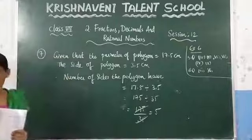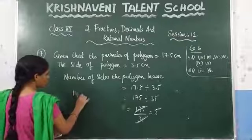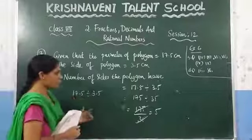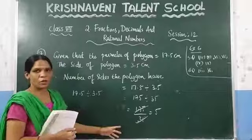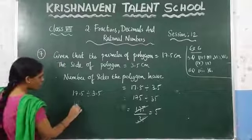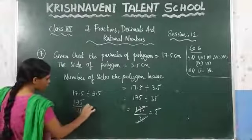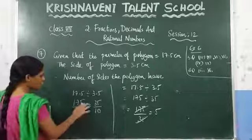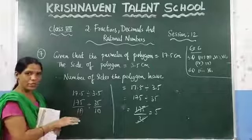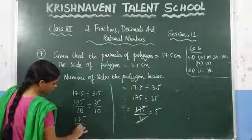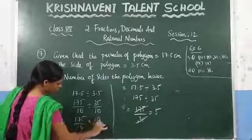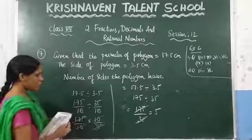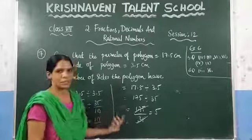You can also solve it the longer way: write 17.5 as 175 by 10 and 3.5 as 35 by 10, then change division into multiplication and write the reciprocal as 175 by 10 into 10 by 35. The 10s cancel, and 175 by 35 gives 5. You can do either method to reach the same answer.